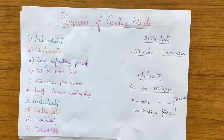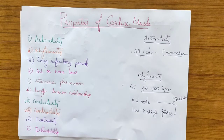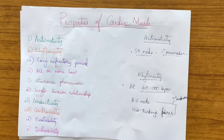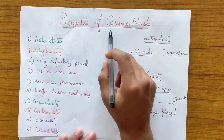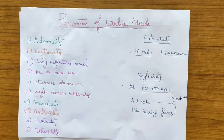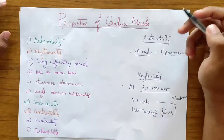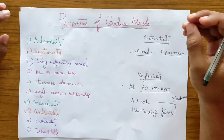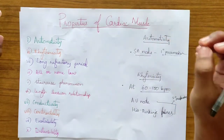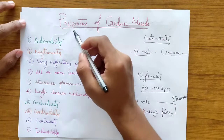Hello, namaskara. My name is Kirtan and I'm a secondary medical student studying in a government medical college. Today we're going to start a new unit — CVS or cardiovascular system. It is one of the longest and most important units in physiology. In this video we'll be talking about the properties of the cardiac muscle, since cardiac muscle is a special muscle fiber different from skeletal muscle.